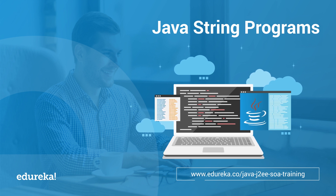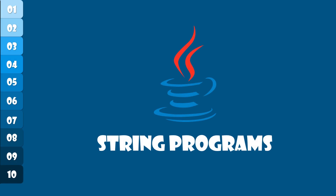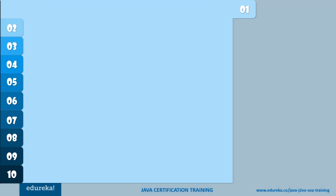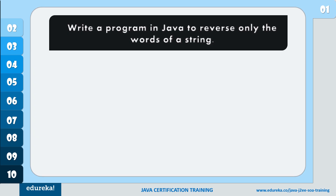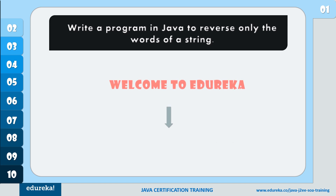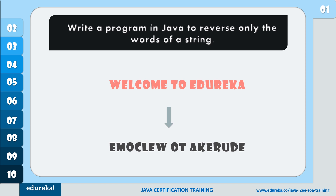Now as you know what strings are, let's begin with some important programs on strings. The first problem statement goes like this: write a program in Java to reverse only the words of a string. Suppose you have a statement like 'welcome to Edureka'. In this, you just have to reverse the words, but the sentence should remain the same. Let's see how to do this.